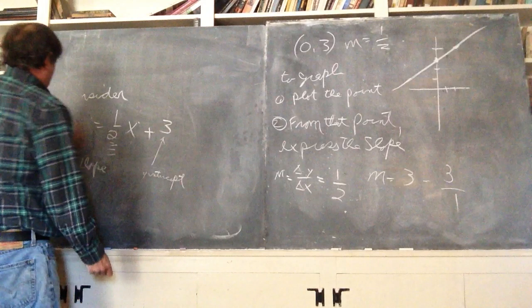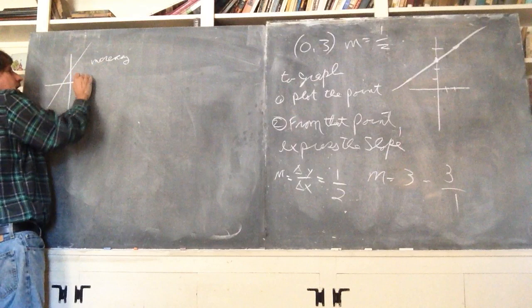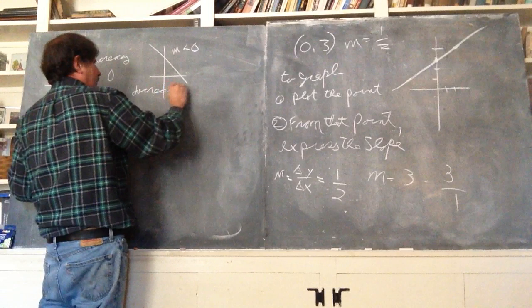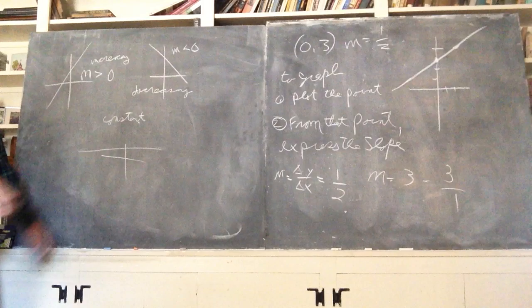Second, I do want to talk about this real quick. Increasing function. Linear function. The slope is greater than zero. Decreasing function. The slope is less than zero. Decreasing. And then, a constant function. The slope is zero. Constant. Well, not quite constant. Try that again. The slope is zero.